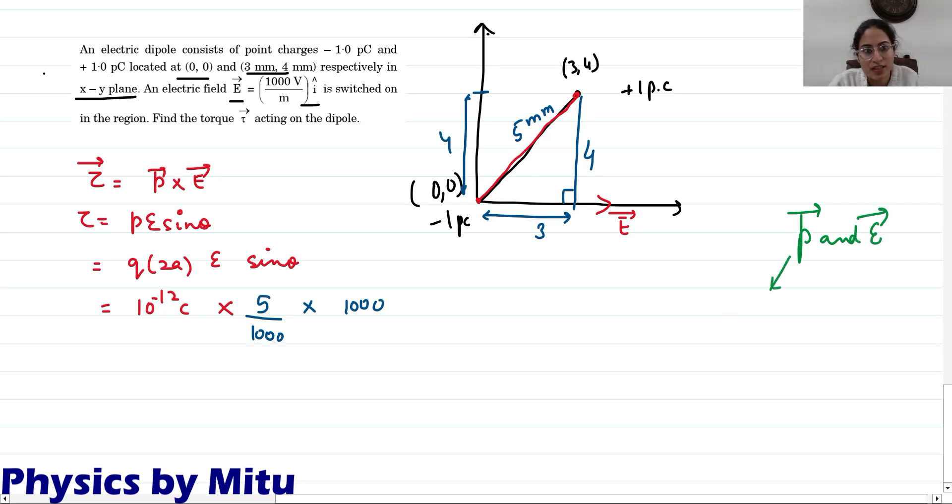What is the direction of P vector? It is from minus Q to plus Q. Your P vector direction is minus Q to plus Q. This is P vector and this is electric field. Theta is given, but sin theta you can find it. Sin theta from the triangle is 4 by 5.